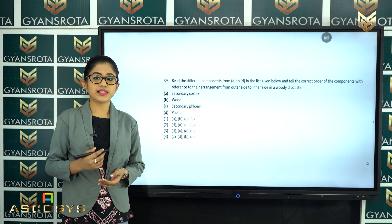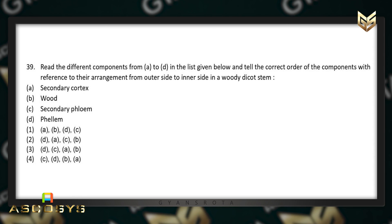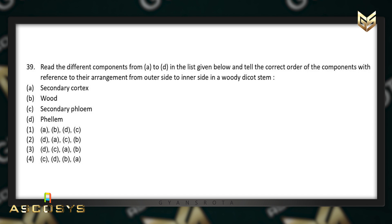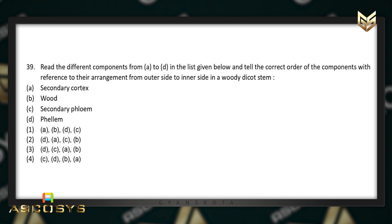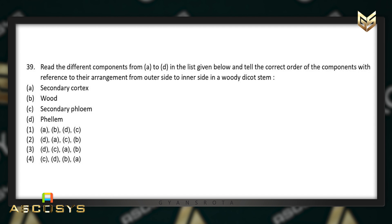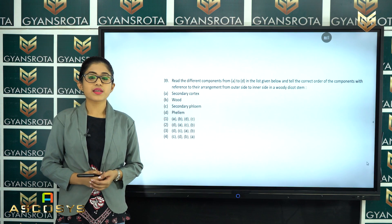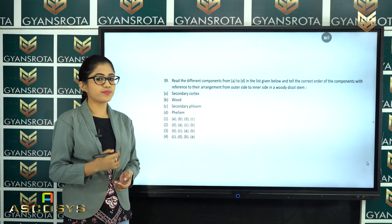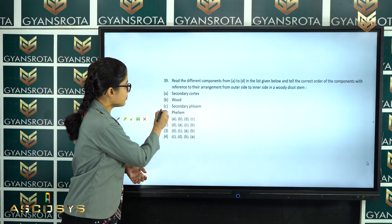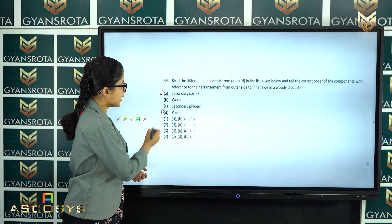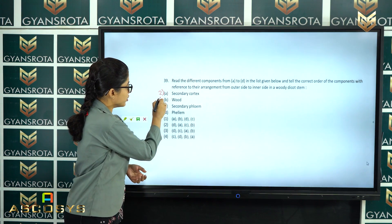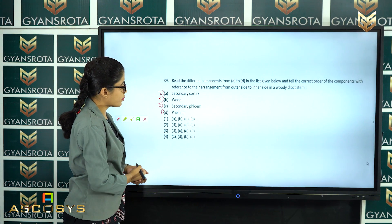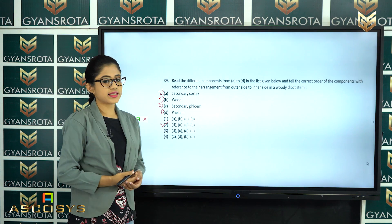The next question is question number 39. Read the different components A to D and give the correct order of arrangement from outer side to inner side in a dicot stem. The components are secondary cortex, wood (xylem), secondary phloem, and phellum. From the chapter Anatomy of the Flowering Plant, the correct arrangement is: phellum, secondary cortex, secondary phloem, then wood. Option number 2 is the correct answer.